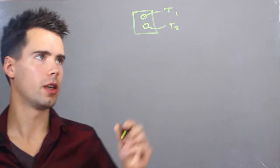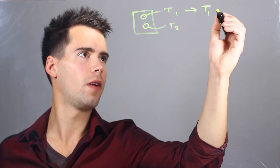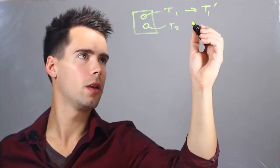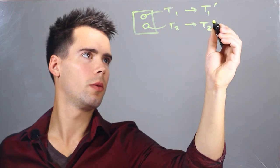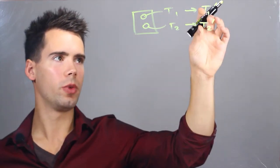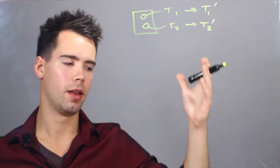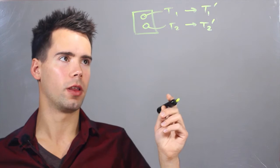Now they'll exchange energy and T1 will go to T1 final, so we call it prime, and T2 will go to T2 prime. Now if we wait long enough T1 prime will be equal to T2 prime, and that just means that whatever these two substances are, they'll reach thermal equilibrium in the end.